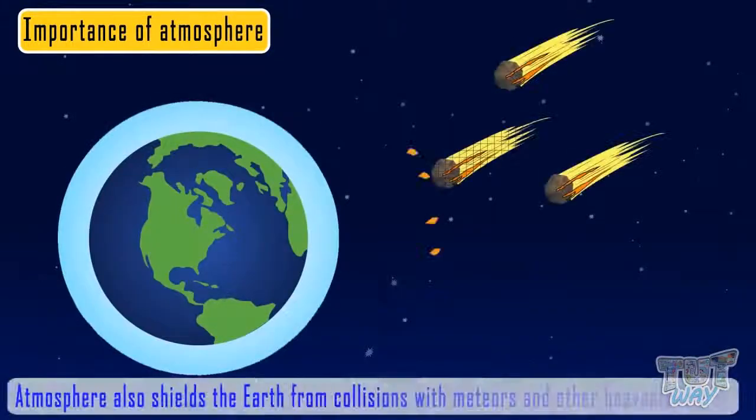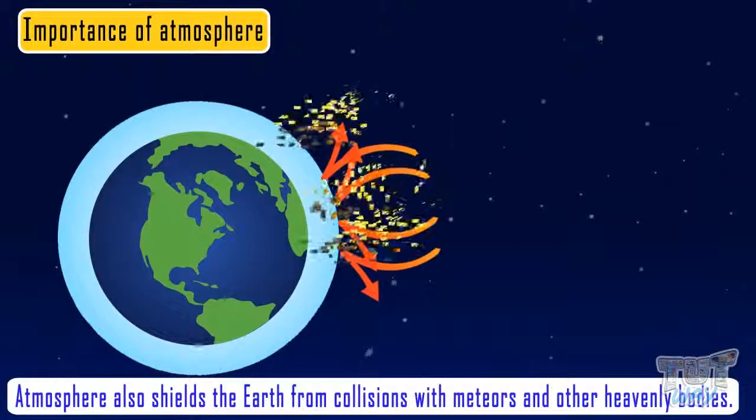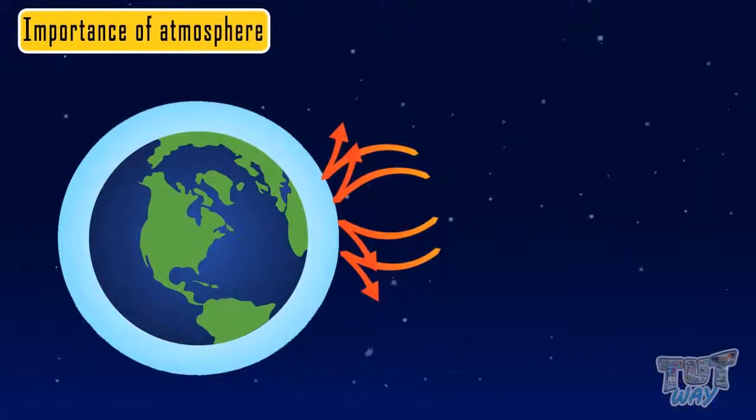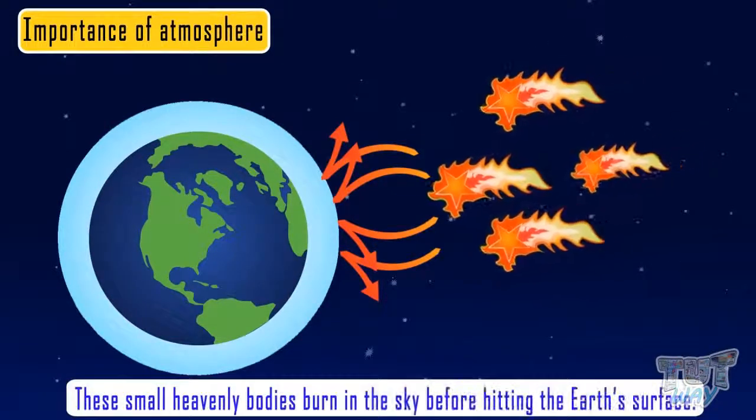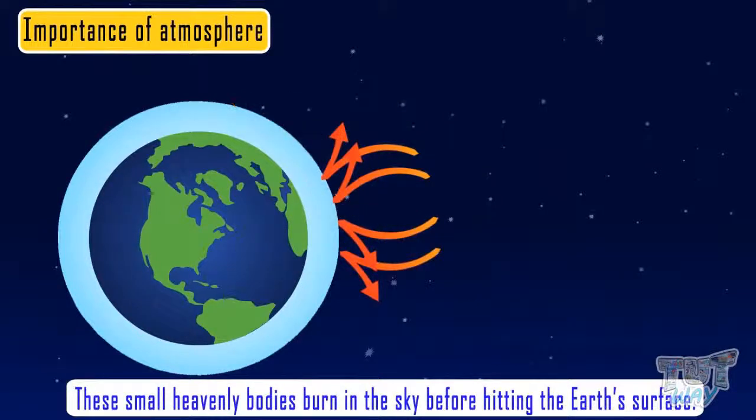The atmosphere also shields the Earth from collisions with meteors and other small heavenly bodies, as these small heavenly bodies burn in the sky before hitting the Earth's surface. So atmosphere acts as our shield.